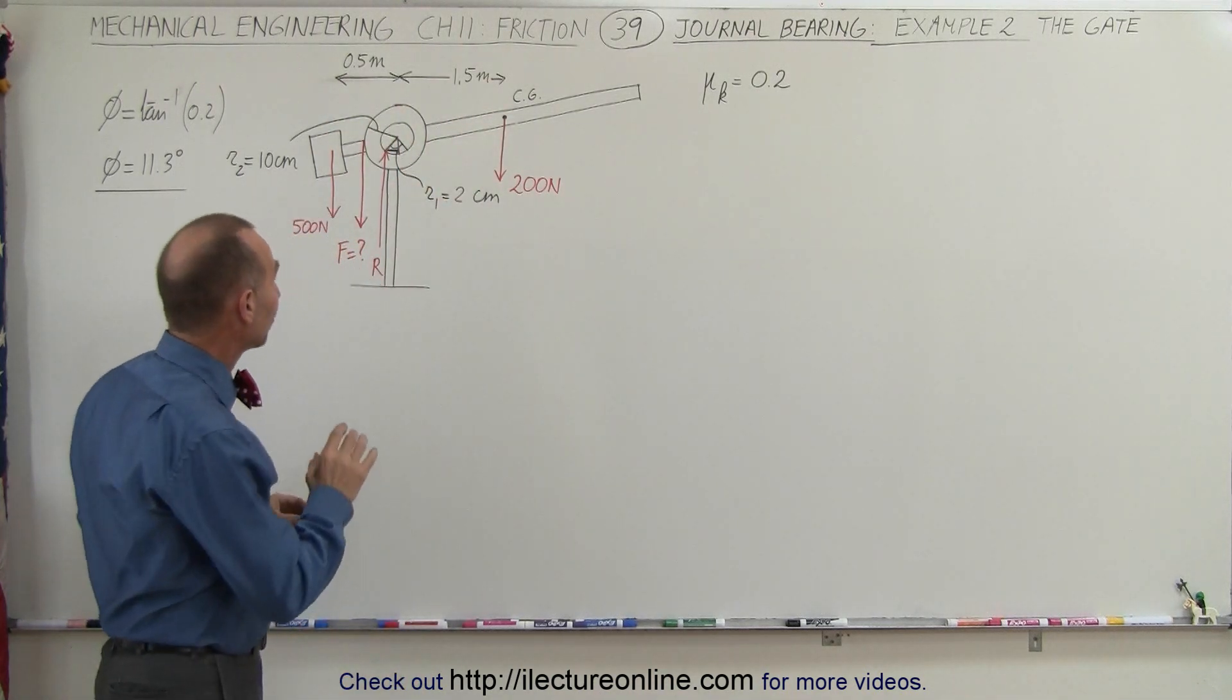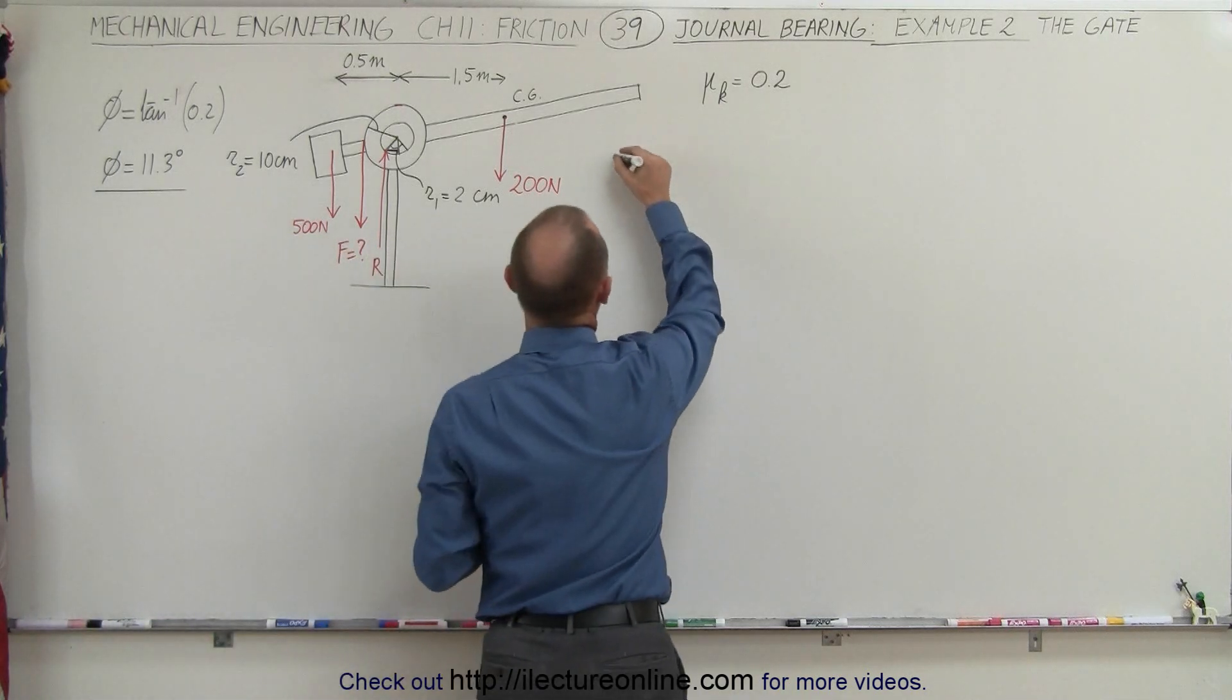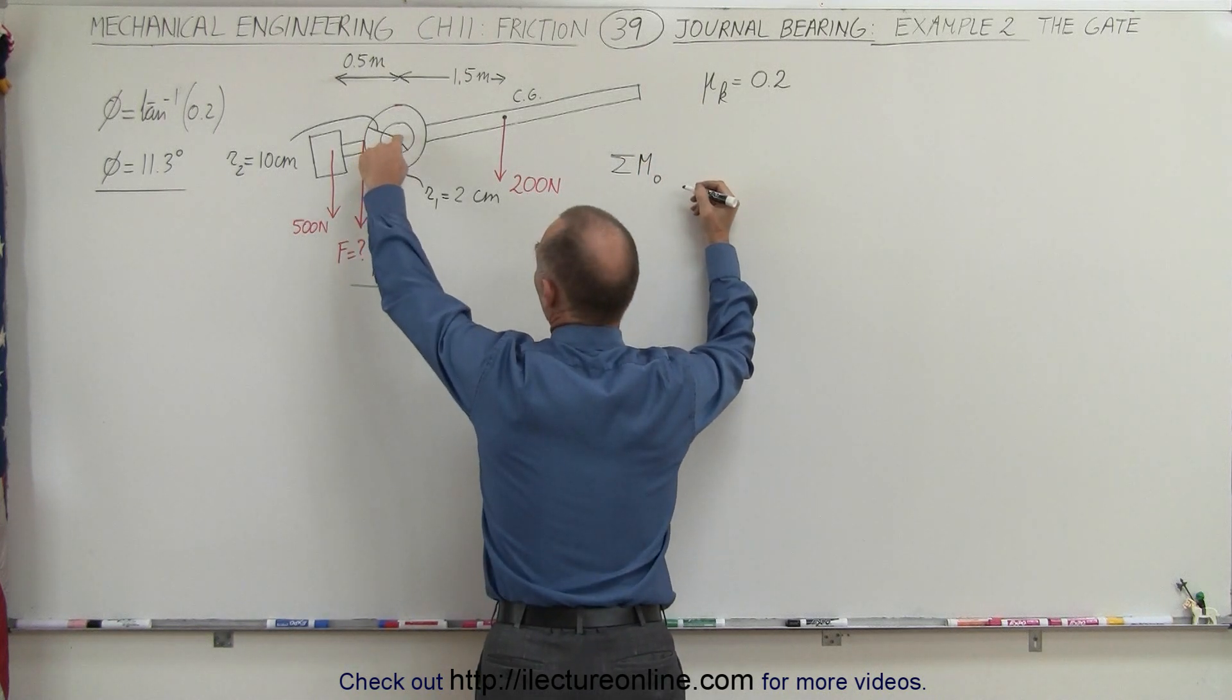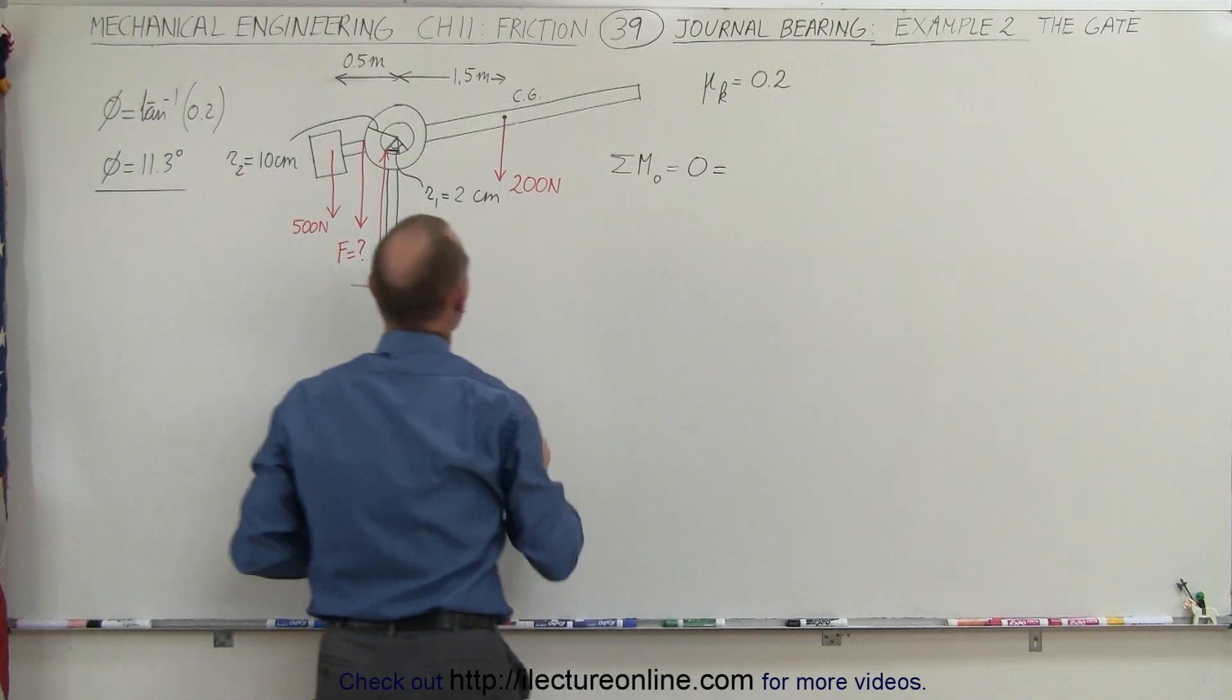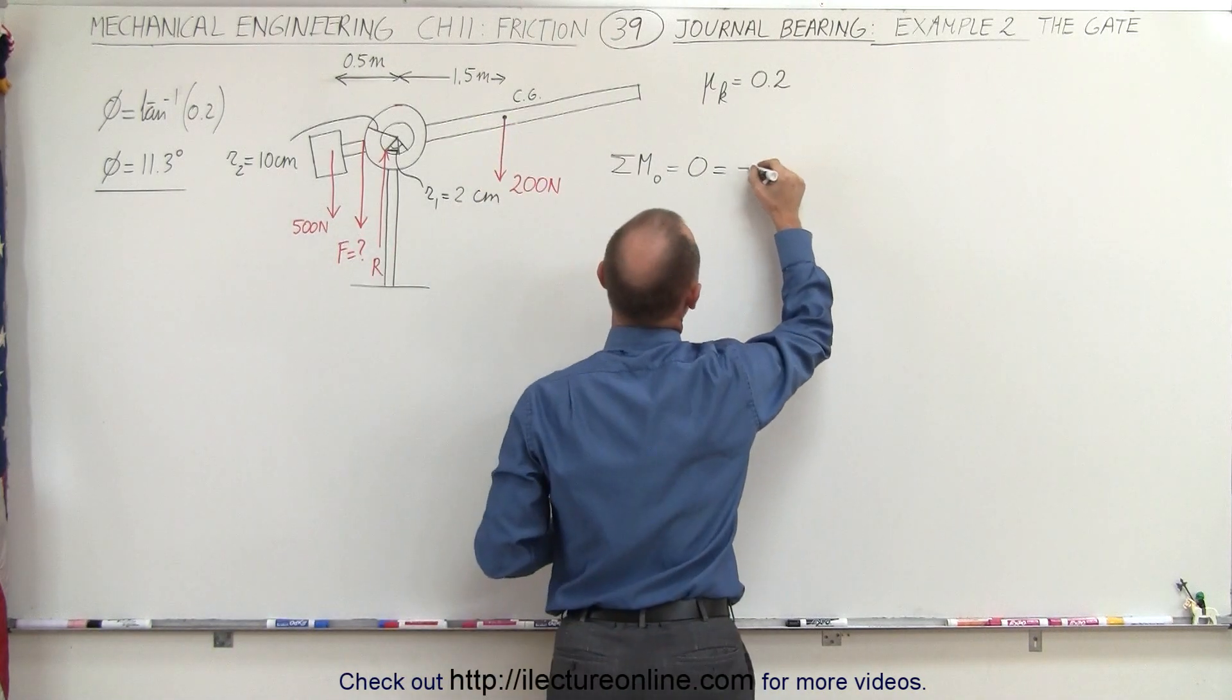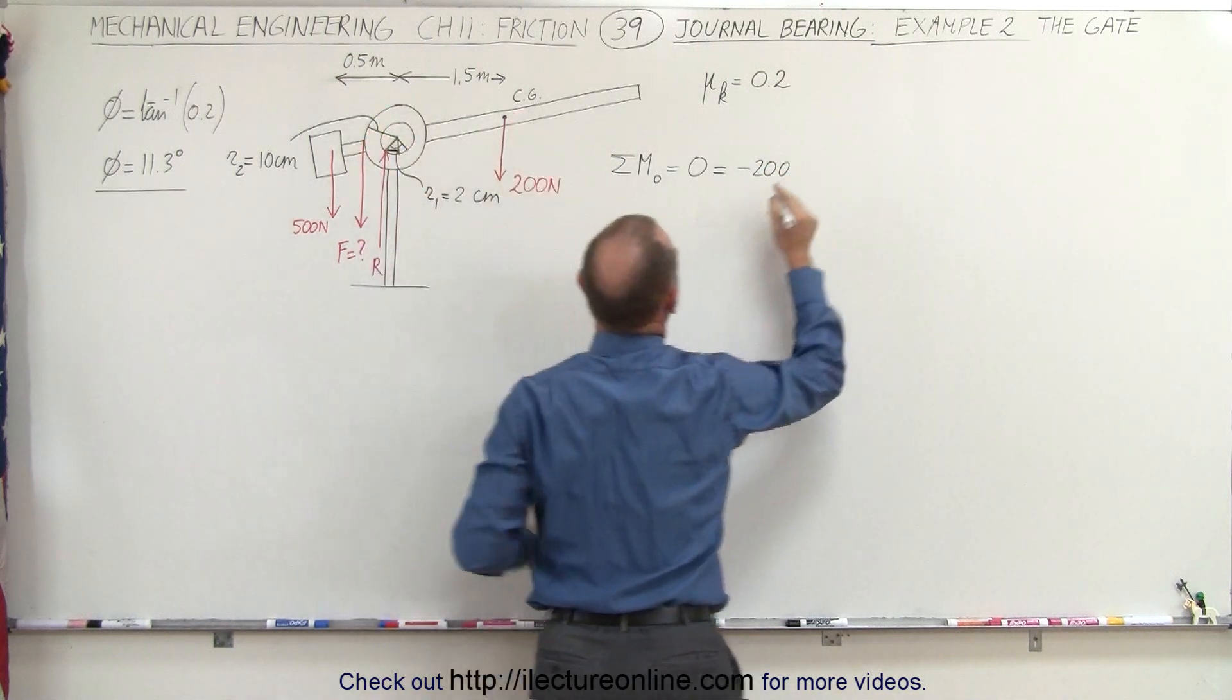Now we're going to find the force by summing up the moments acting on this gate. The sum of the moments about point O, that would be the center point right there, is equal to zero, and let's add them all up. We have the 200 N force acting in a clockwise direction, that's minus 200, and the distance would be 1.5 meters.